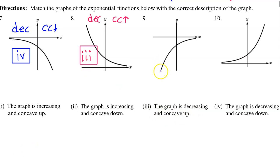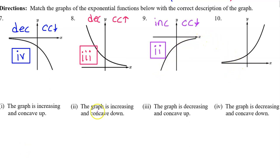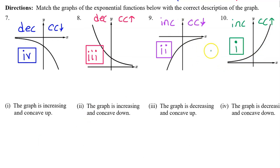For number nine, the graph is increasing from left to right and it is concave down. Increasing and concave down is Roman numeral two. Number ten is increasing from left to right and it is concave up. Increasing and concave up is Roman numeral one.